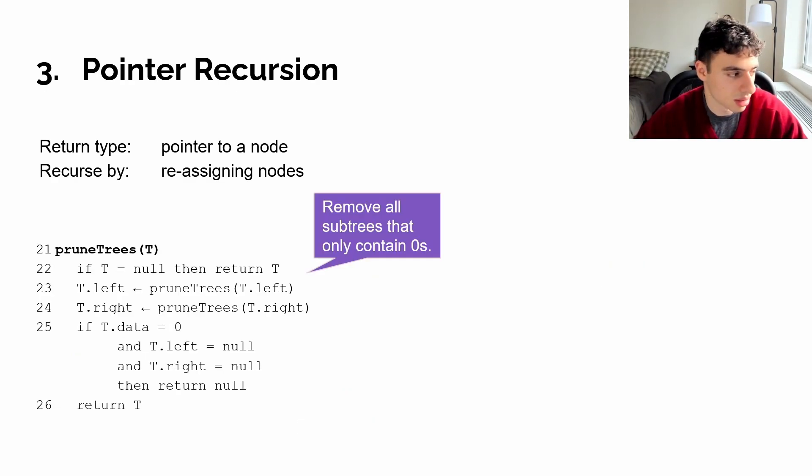So here's an example solution to prune trees that uses pointer recursion. First, we're going to check if T is null. If our root is currently null, then we're just going to return null. Next, we're going to assign to our left child a call to prune trees on T left. We're going to do the same for T right, call to prune trees on T dot right. And this is where the pointer recursion technique is coming to play. We're recursing down the tree by reassigning the nodes of our parent.